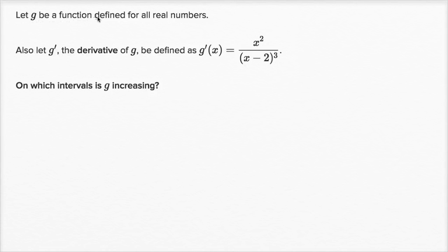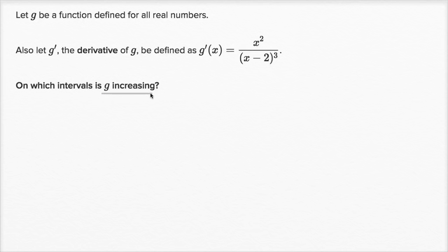Let g be a function defined for all real numbers. Also let g prime, the derivative of g, be defined as g prime of x is equal to x squared over x minus two to the third power. On which intervals is g increasing?